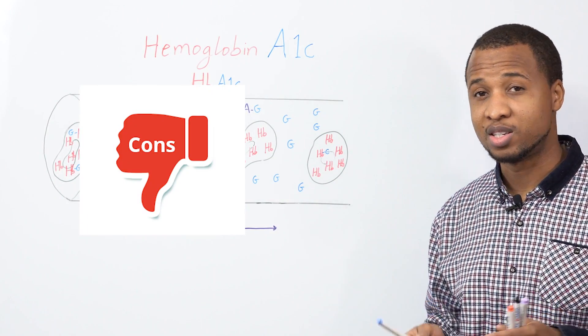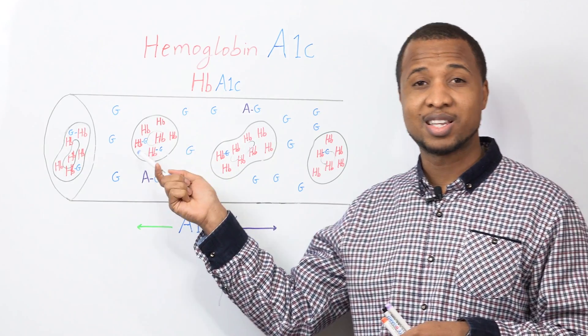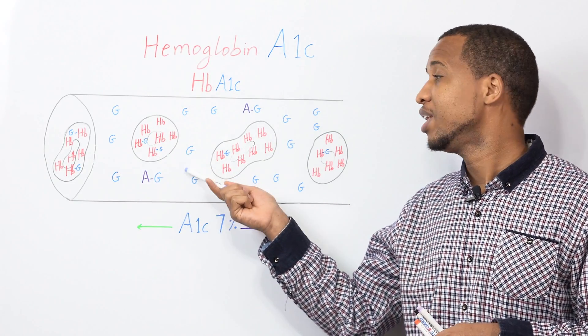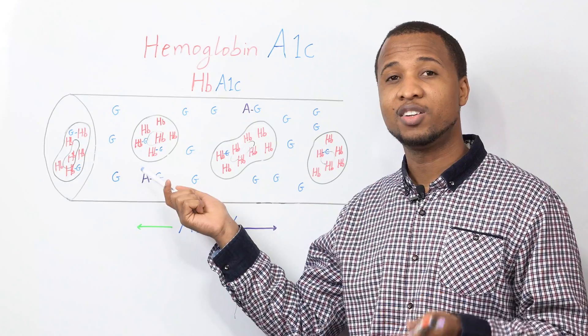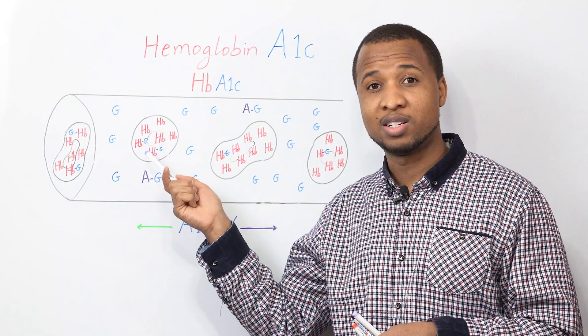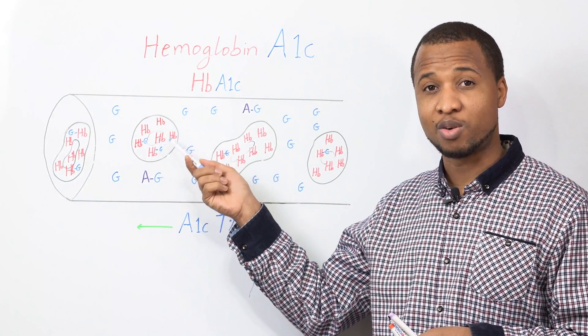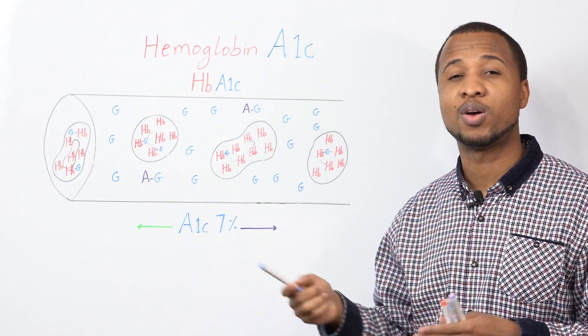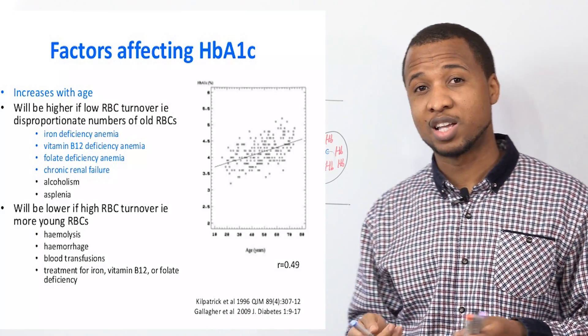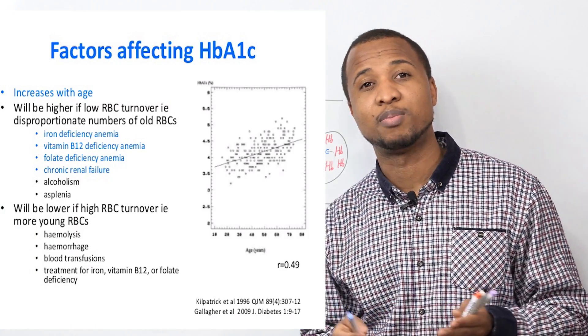Now, there are also some problems with A1c because you measure the glucose inside your red blood cells. So anything, any illness that affects your red blood cells or the hemoglobins in your red blood cells will affect your A1c. Patients with anemia, for example, their A1c test will not be accurate.